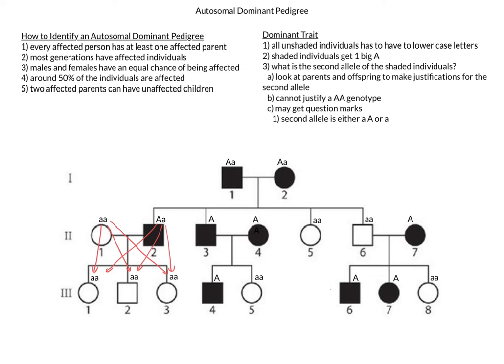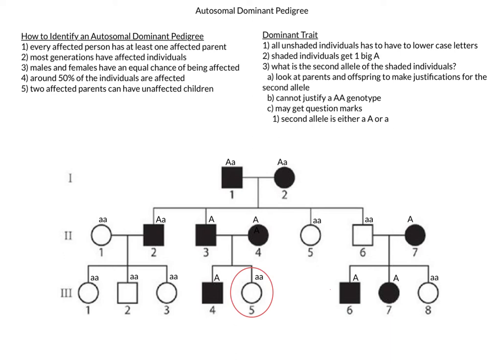Now let's see what individual 2-3 is going to be like. Again, we have parental information that will not be helpful, but this individual does have a child that is homozygous recessive. This again means that both the mom and the dad of the child would have to give one recessive allele each. And as such, both individuals 2-3 and 2-4, the father and mother respectively, would have to be both heterozygous for the child to become homozygous recessive.